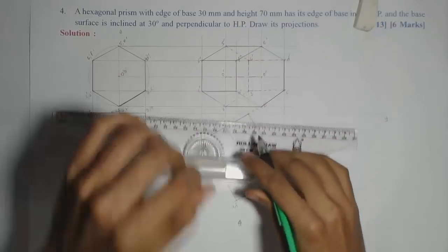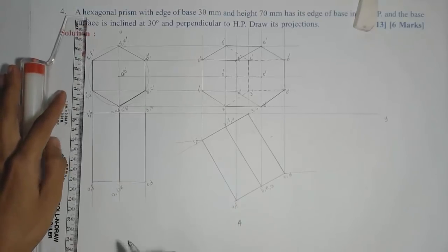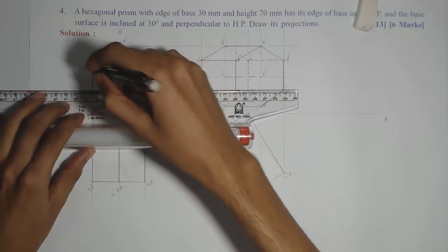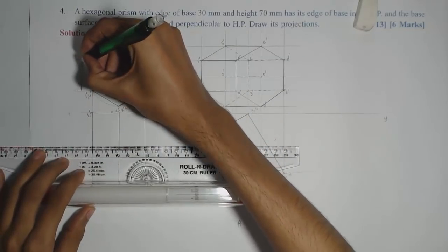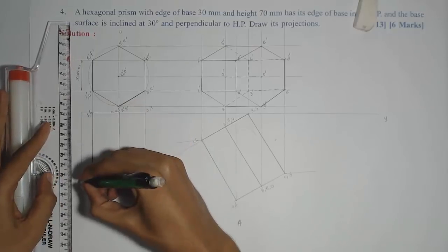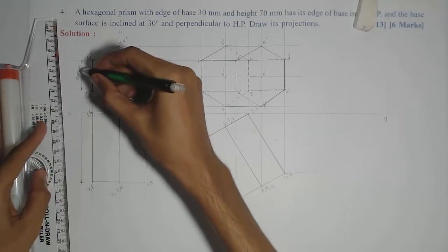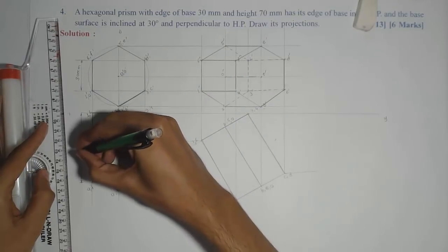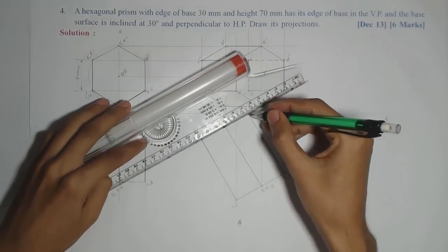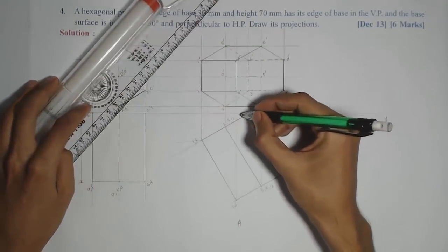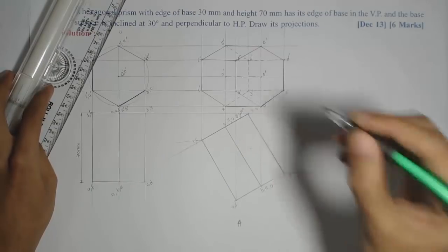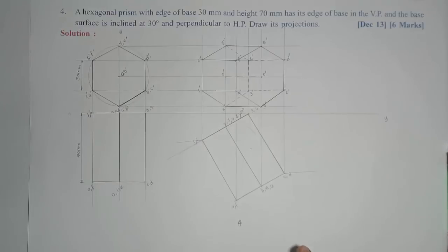Now the last part remaining is showing the dimensions. I will show the base edge of 30 mm in the front view, and the axis height of 70 mm is shown in the top view. The inclination given for the base — the notation will be phi and not theta, because we are redrawing the top view — so this angle is denoted by phi and equals 30 degrees. This completes the solution for this particular problem.